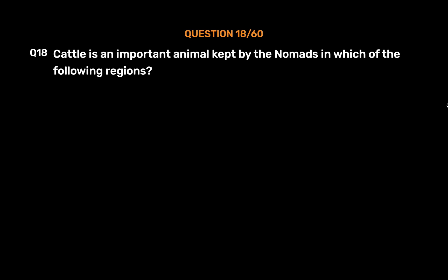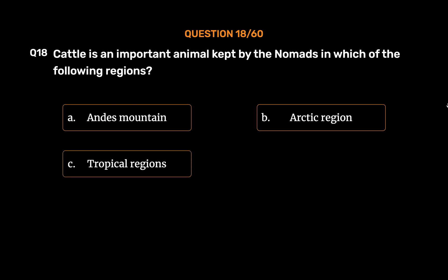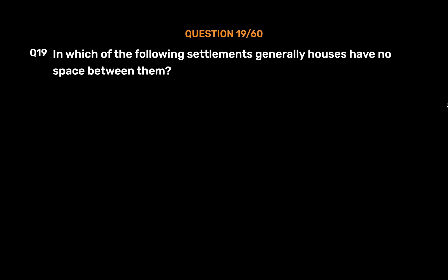Question number 18: Cattle is an important animal kept by nomads in which of the following regions? Option A: Andes mountain, option B: Arctic region, option C: tropical regions, option D: Sahara desert region. The correct answer is option C, tropical regions. Cattle is an important animal kept by nomads in the tropical regions of Africa. Cattle is considered the most important livestock in this region.